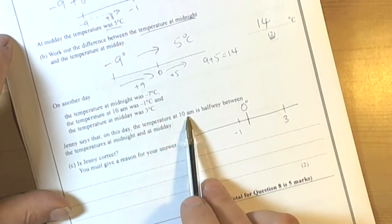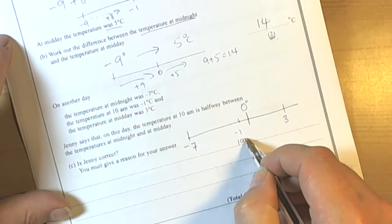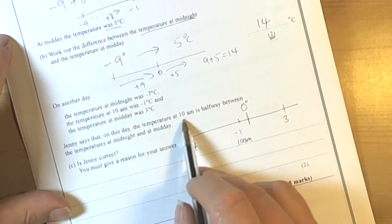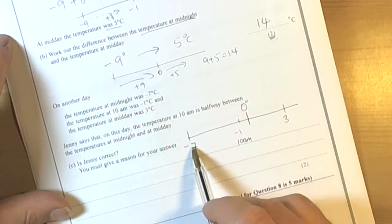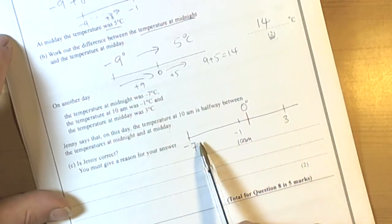So Jenny says that on this day the temperature at 10am, so this was 10am, was halfway between. So we were looking halfway between these. Well let's have a look.